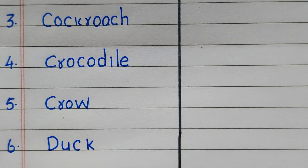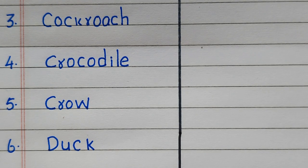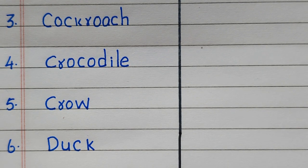Other examples of oviparous animals are Cockroach, Crocodile, Crow, and Duck.